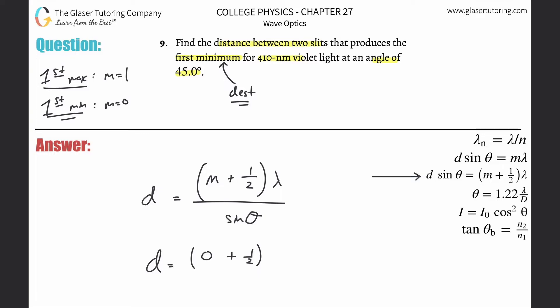Times then the wavelength of 410 nanometers, but we need that in meters. So take that and multiply by 10 to the minus ninth, then divide the whole thing by sine of that angle, sine of 45. Take out the calculator and go to town.